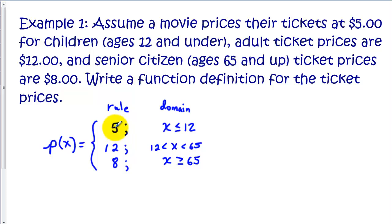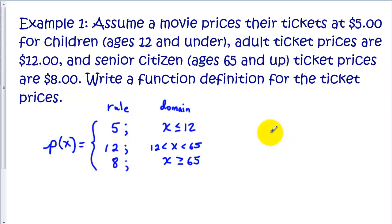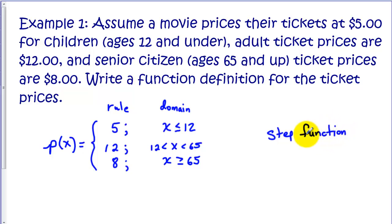In this particular case, each rule is a constant, and a constant function is a horizontal line on a graph. So this particular kind of function, where all the pieces are horizontal lines, is referred to as a step function. If you hear the term step function, you know that each segment of the function will be a horizontal line.